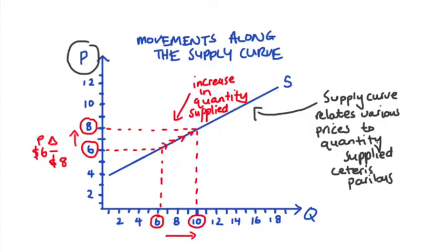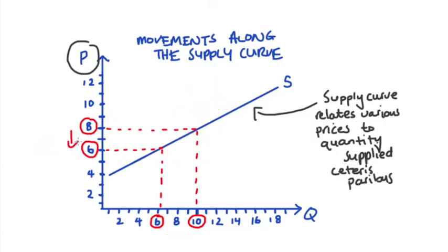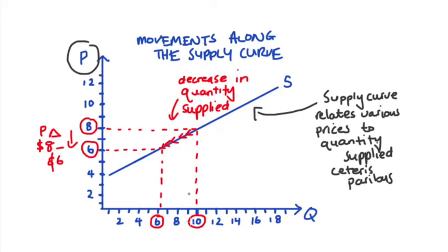If we go the other way, so decreasing the price, say from eight dollars to six dollars, we would have a decrease in the quantity supplied from ten to six units. Again we move along the curve due to the price change and we call this a decrease in the quantity supplied.